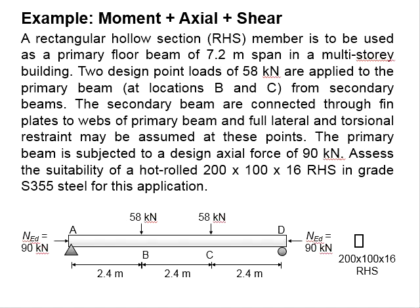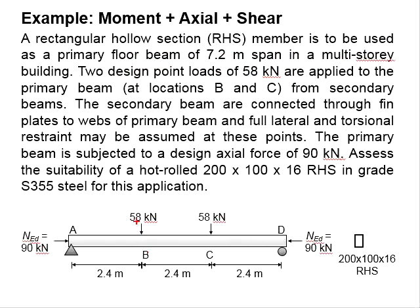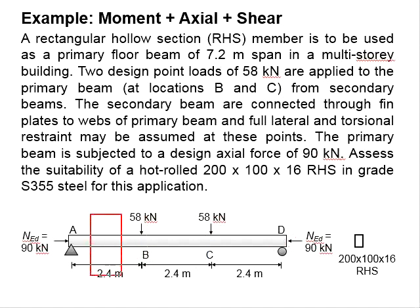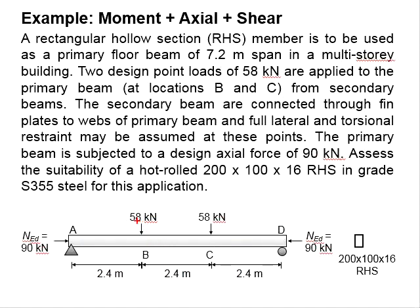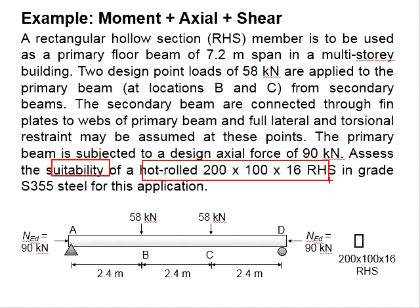Let us try an example to design a member subjected to moment, axial force, and shear loads concurrently. The member is a rectangular hollow section to be used as a primary floor beam of 7.2m span in a multi-story building. There are two point loads of 58 kN applied at points B and C through a secondary beam. The spans are equally divided into three of 2.4m, and the secondary beam acts as a restrained point to the primary beam. The question asks us to assess the suitability of the hot-rolled section 200×116 in steel grade 355 for this application.